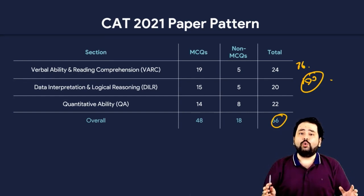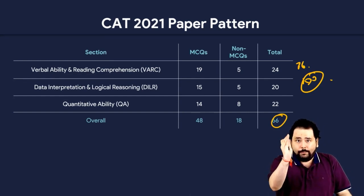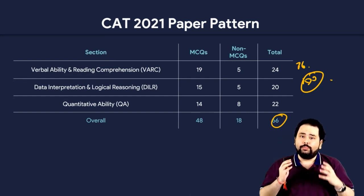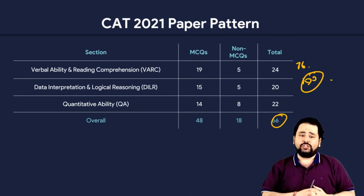I think 66 questions in a two-hour paper is optimal. IIM Ahmedabad did a brilliant job. Generally you'll hear most people come out and complain — 'IIM made this error, CAT made this error' — but no, I think CAT 2021 was great.